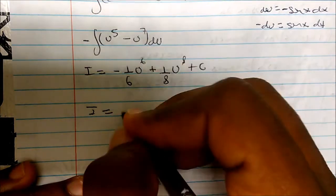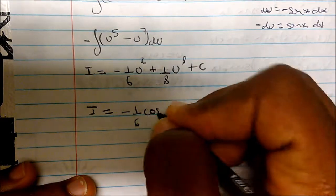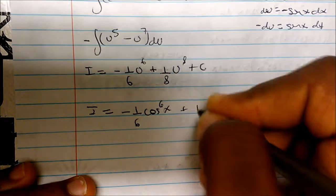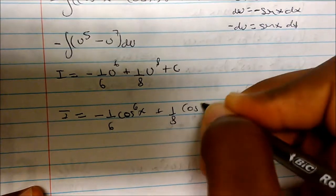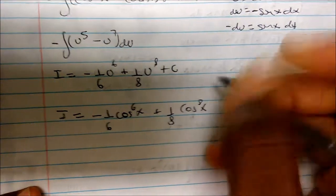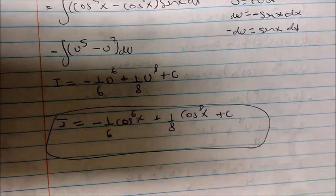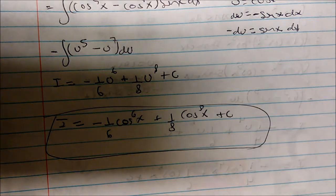So my integral is given by negative one-sixth cosine to the sixth x plus one-eighth cosine to the eighth x plus C. You can see the general pattern: any time both powers are odd, just borrow one and use the identity, distribute, and then use u-substitution.